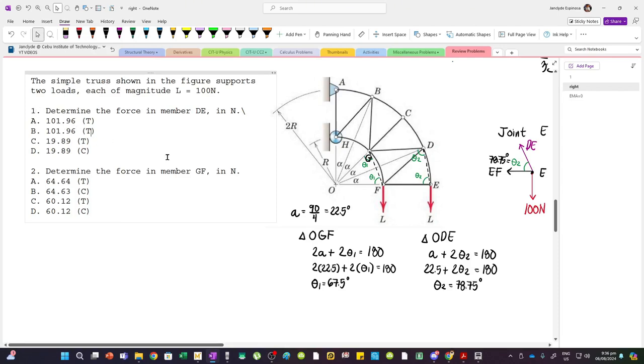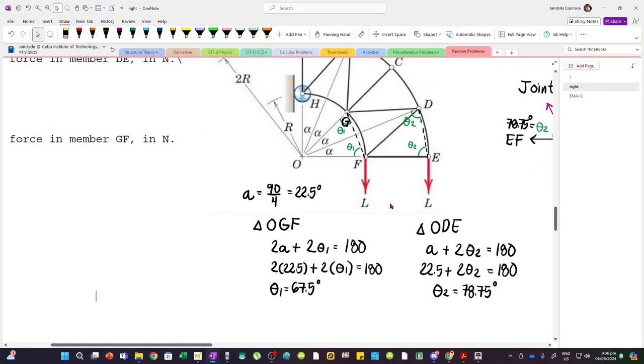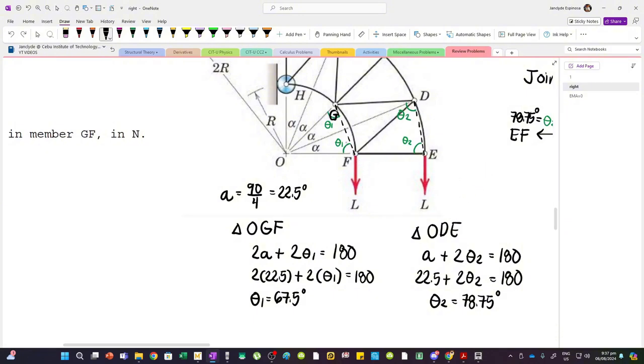At joint E, we have this system. We have point E with an applied force of L. L is 100 newtons. Then we have member EF, assume tension, and we have member DE which is inclined by this angle.